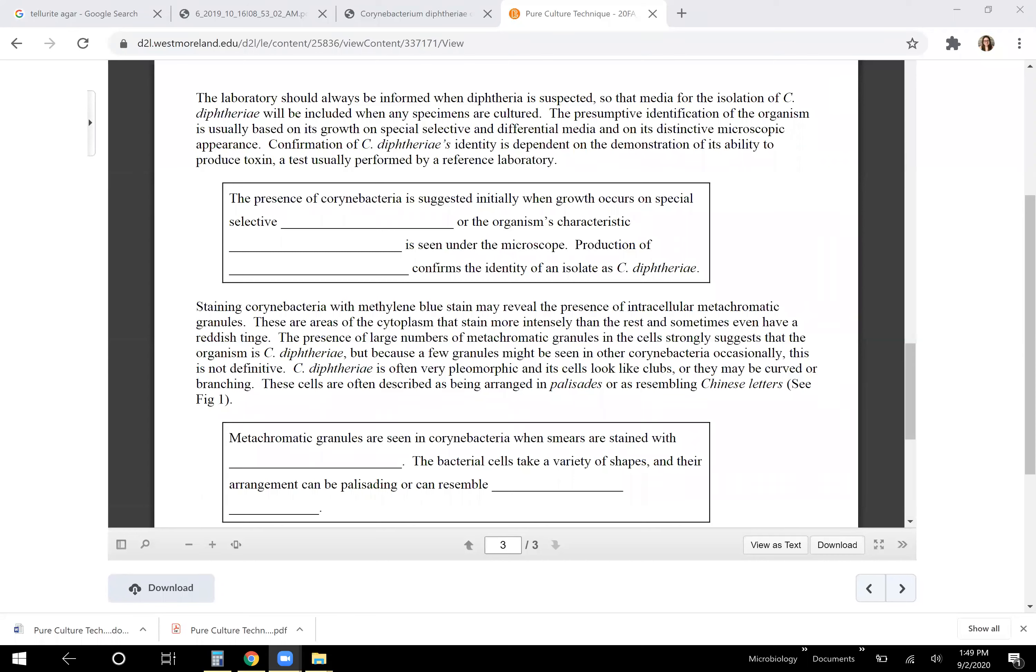Differential media contains something that when metabolized by the cells, will usually turn them a different color or perhaps cause them to fluoresce or might cause the media to solidify or liquefy or some other way that you can visually tell the difference between two different species growing on the same petri dish.